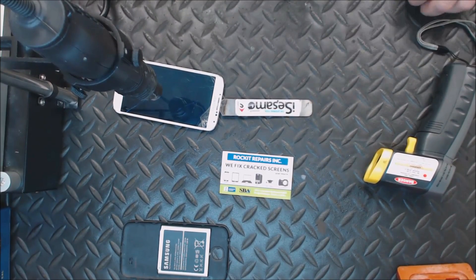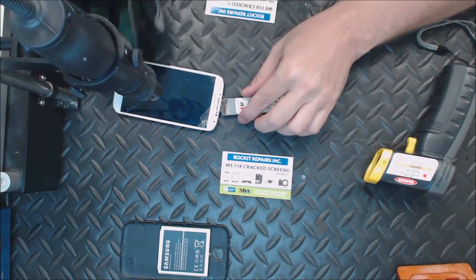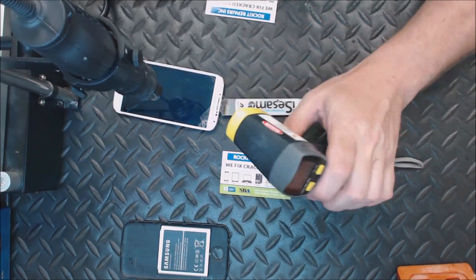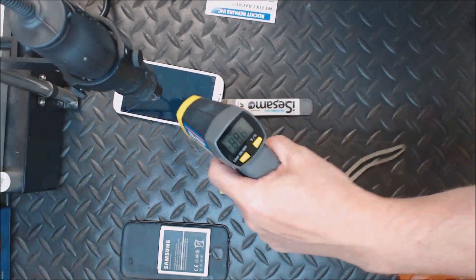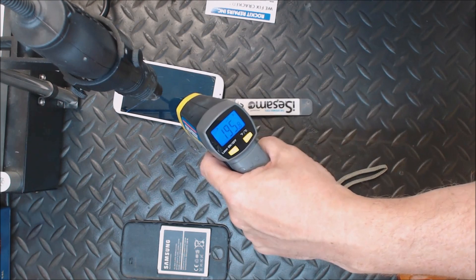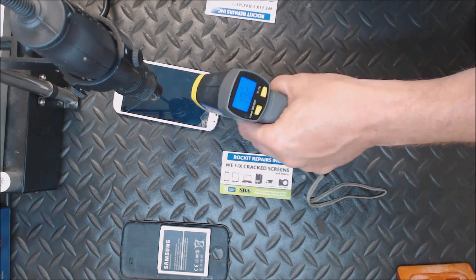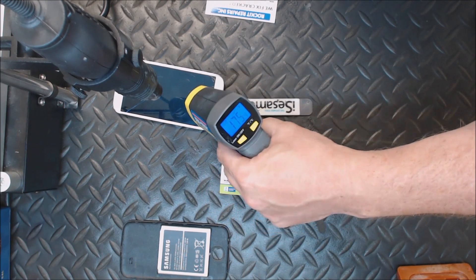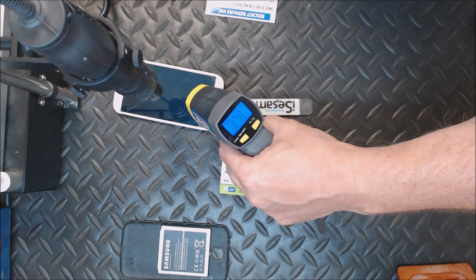Alright, this video is on how to remove the glass from the Galaxy S4. Once you get the temperature up to about 100, you want 170 degree range. See, I have mine at 178, 177. That's about where you want it.